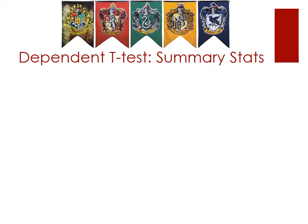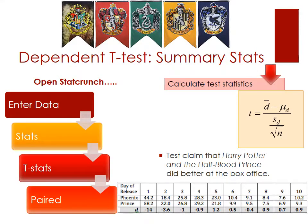In this section we're going to shift a little bit and look at how you can calculate the summary stats for raw data with a dependent t-test. We'll go back and use the data from the Harry Potter example — Half-Blood Prince and Order of the Phoenix — and look for the values we need to calculate our t manually: d-bar, mu of d, and s of d.